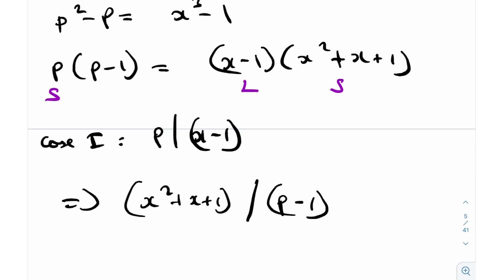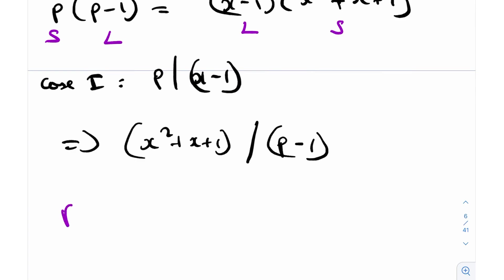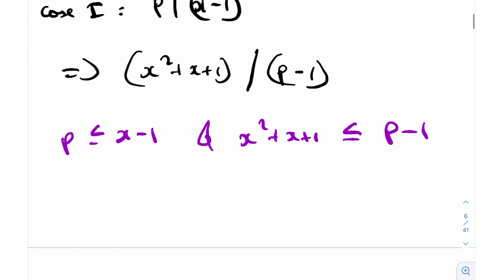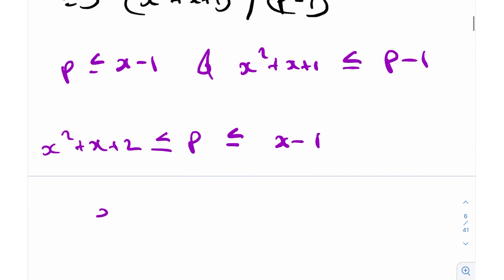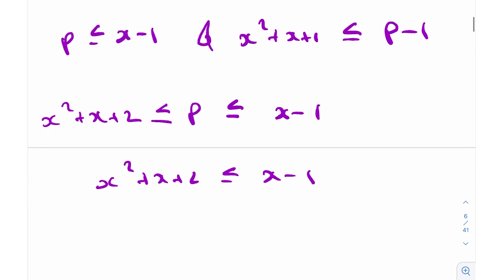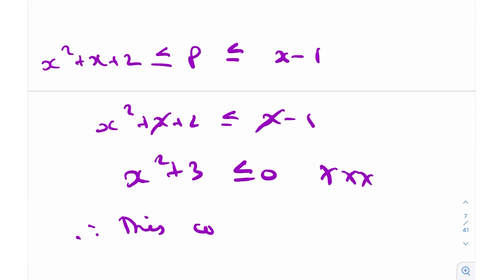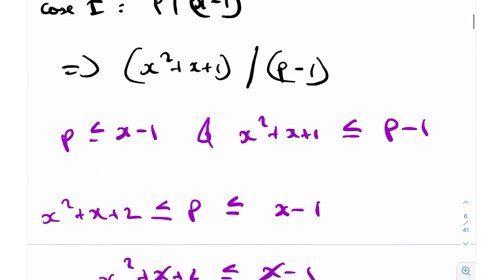Using this intuition, p - 1 needs to be larger, and hence (x² + x + 1) divides (p - 1). This gives us p ≤ x - 1, and similarly x² + x + 1 ≤ p - 1. From these together, x² + x + 2 ≤ x - 1, which means x² + 3 ≤ 0 — never true for any x. Therefore Case 1 has no solutions.